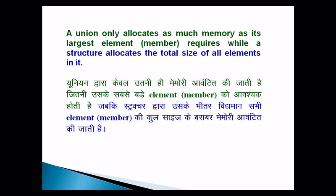In a union, if the largest element occupies 2 bytes, then only 2 bytes will be allocated — not 3. So in a union, only the memory required by the largest member is allocated, which in this case is 2 bytes, making the whole location 2 bytes.